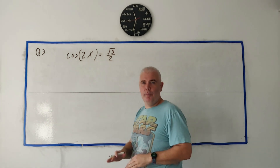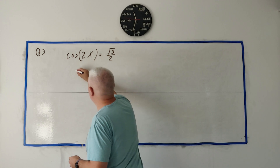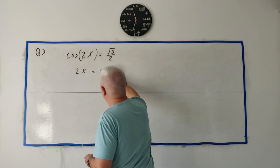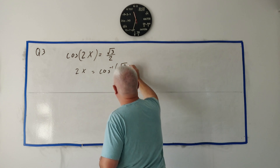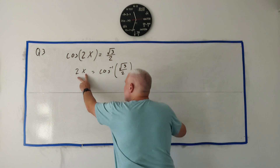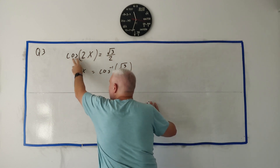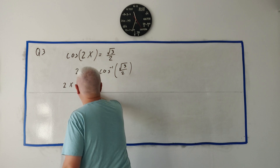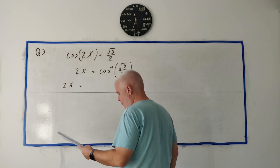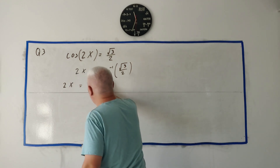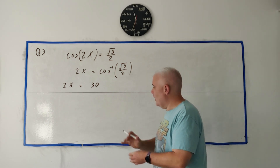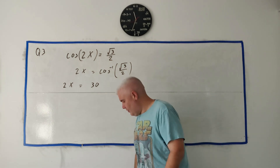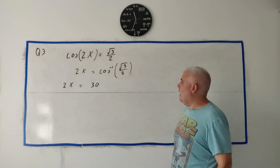Here's how I would solve this: I would just start solving and not worry yet about the constraint that x is between 0 and 360. I'd take the inverse cosine of both sides — that's the inverse cosine of √3/2. The key thing is I leave 2x as it is and solve for 2x first. The calculator gives us 2x = 30, so x = 15. That gets you some marks, but not all.